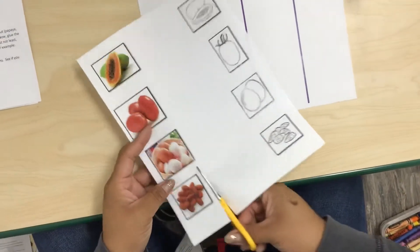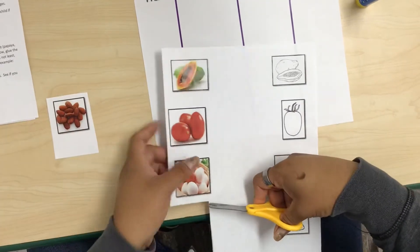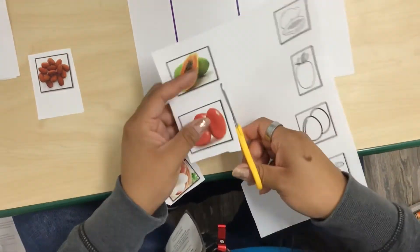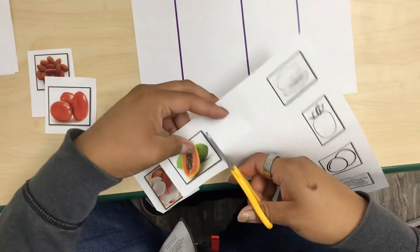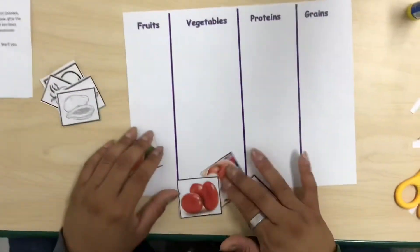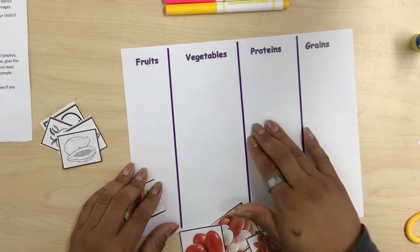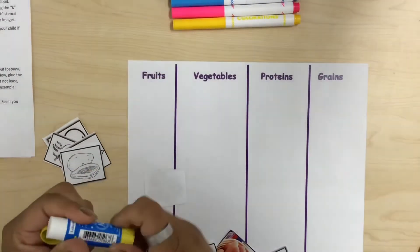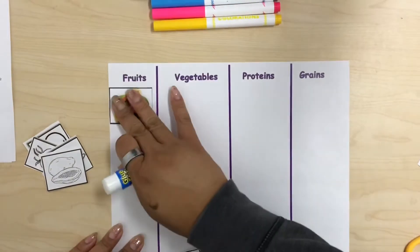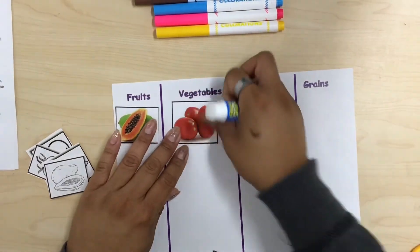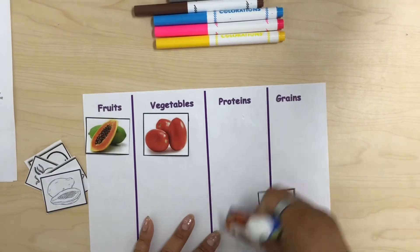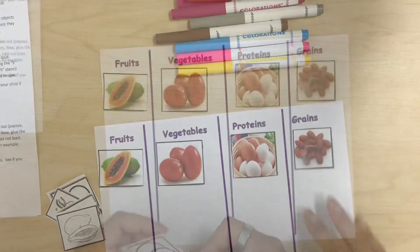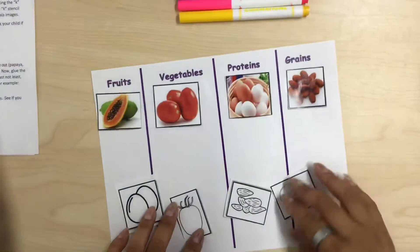Now that we cut out all of our images, we're gonna put them on each category. We have here fruits, vegetables, proteins, and grains. For fruit we already have our papaya, so we'll glue our papaya under fruits. For vegetables we have tomatoes. For protein we have our eggs, and for grains we have our nuts, which we have here, our almonds. We're gonna take out all our other images or drawings and color them in and glue them to each category.